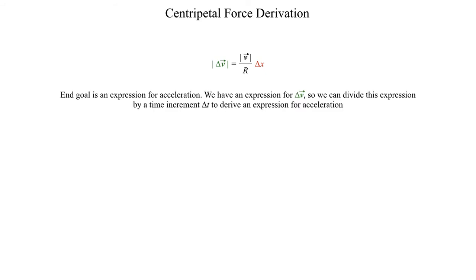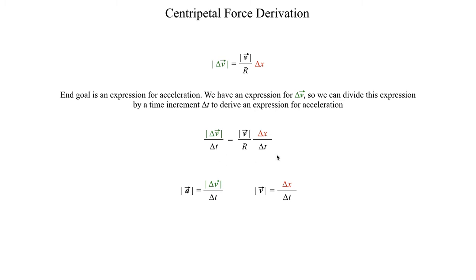The end goal is to find an expression for acceleration. Dividing both sides by a time increment delta t gives us delta v over delta t on one side, which is acceleration, and delta x over delta t on the other, which is speed. Making those substitutions, we get that the magnitude of the centripetal acceleration equals v² divided by r, the radius of the circle.